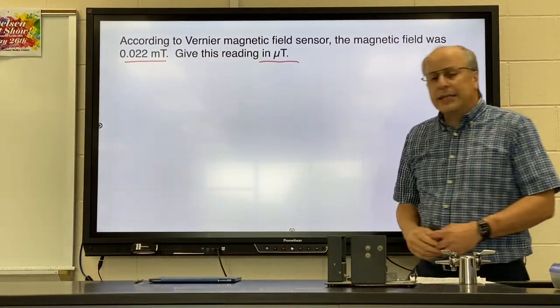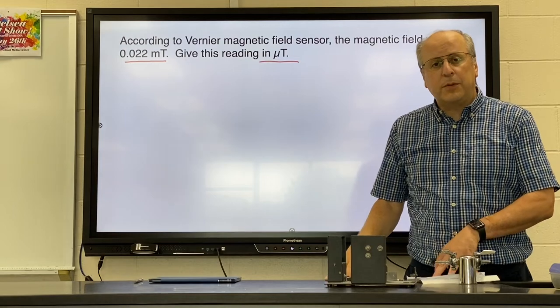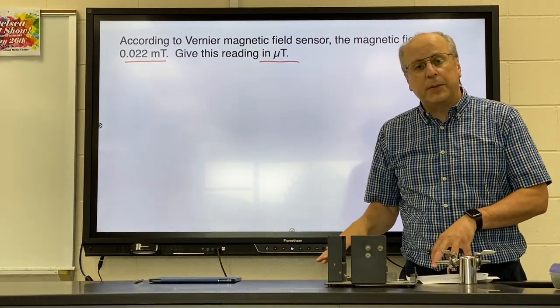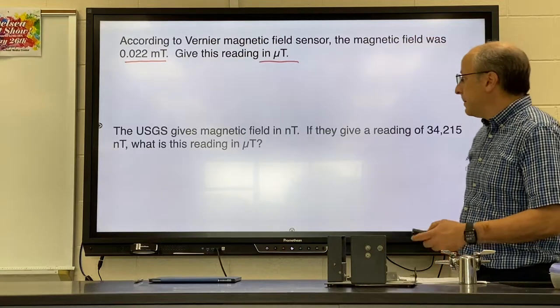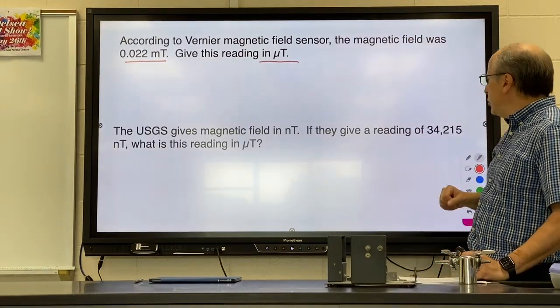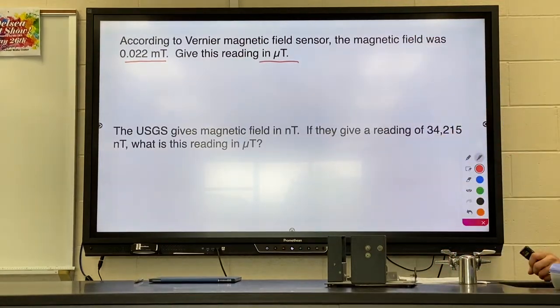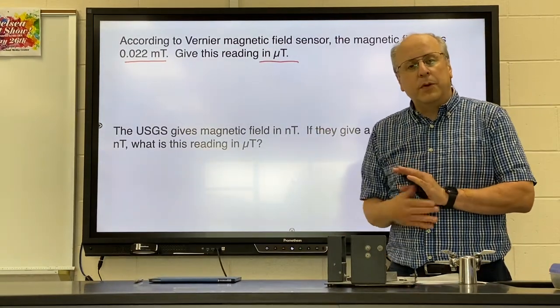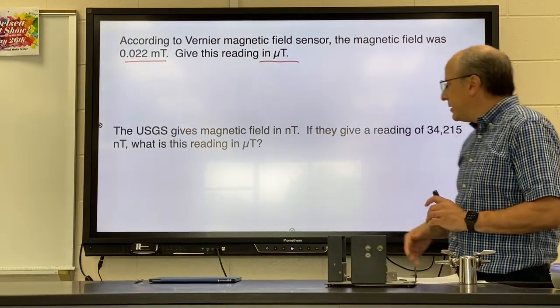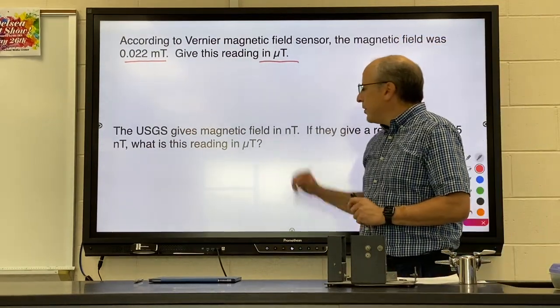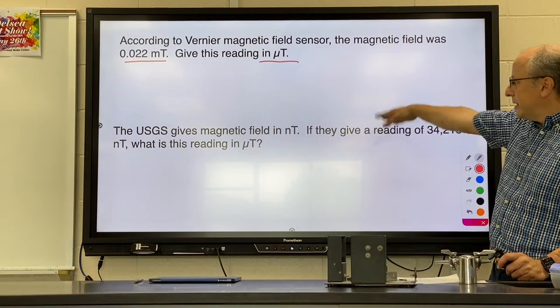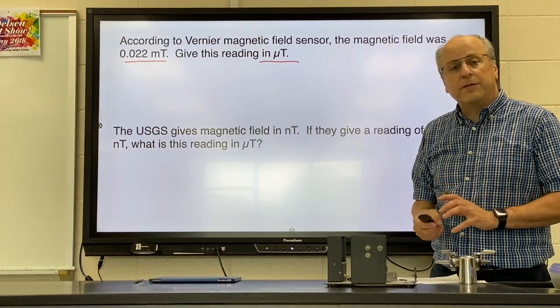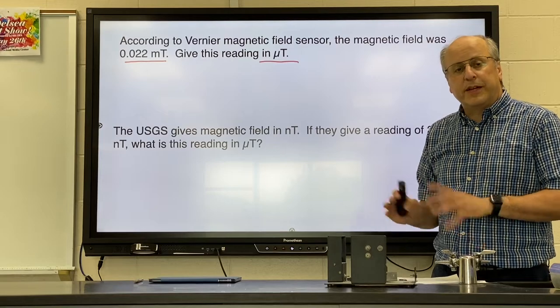To convert to microtesla, you're just going to move the decimal point three places to get it to a number between one and a thousand. Same thing with the USGS. When they give you a magnetic field in nanotesla, it's way more than a thousand. So you want to move your decimal point three spots to turn it into microtesla. So just practice that skill. Make sure you convert from one metric prefix to another.